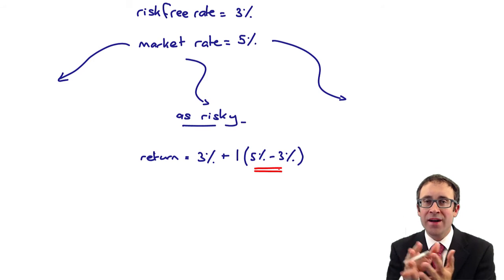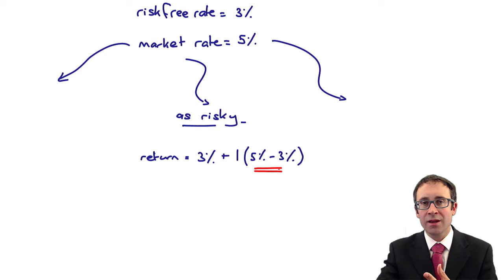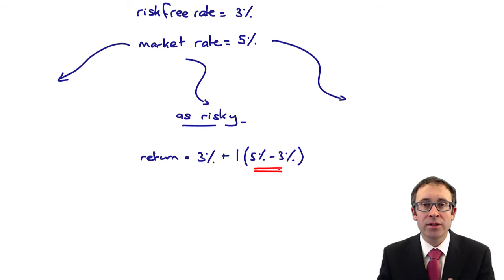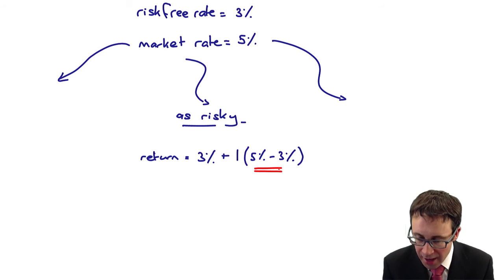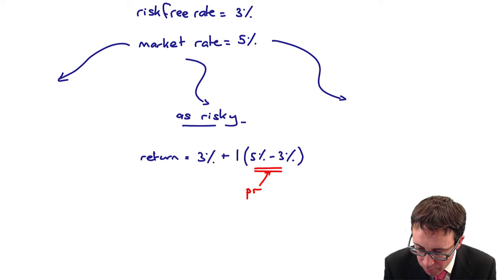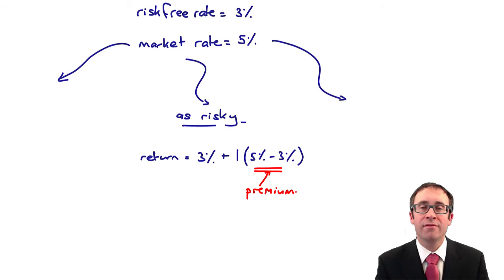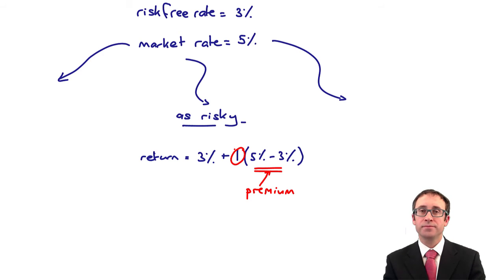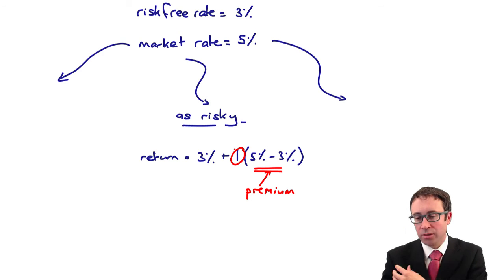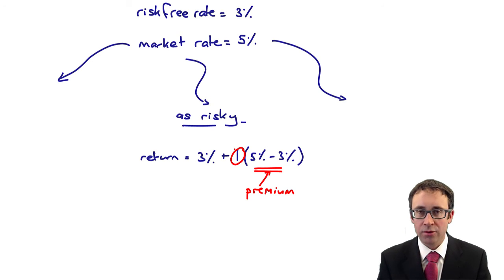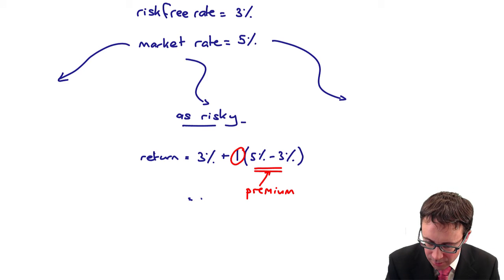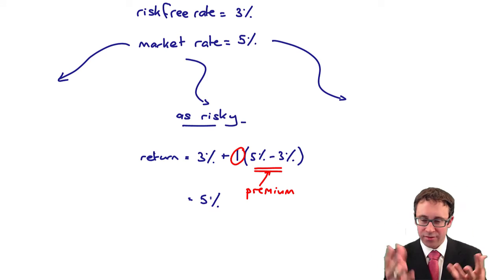I'm going to get a 5% return by investing in the market. If I know I'll get 3% for investing in government bonds and gilts, I need an extra 2% above the 3% to get the market return. So you have effectively a premium above your risk-free returns. Because the investment is as risky as the market, the beta factor we use is 1. So: 3 plus 1 times (5 minus 3) — 5 minus 3 is 2, 1 times 2 is 2, plus 3 is 5. The return you get is 5%, which is exactly what we wanted.